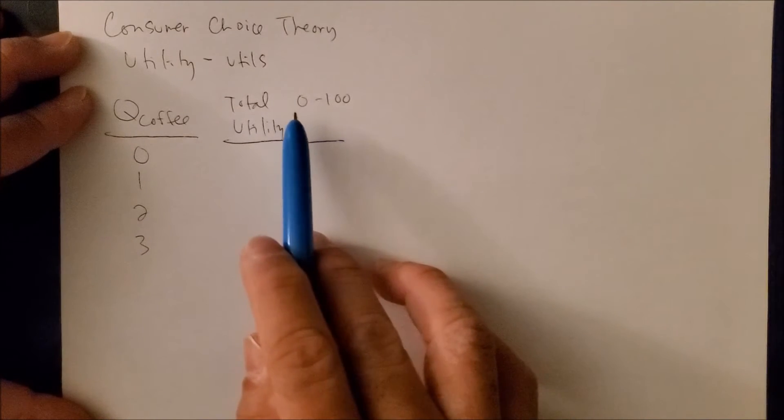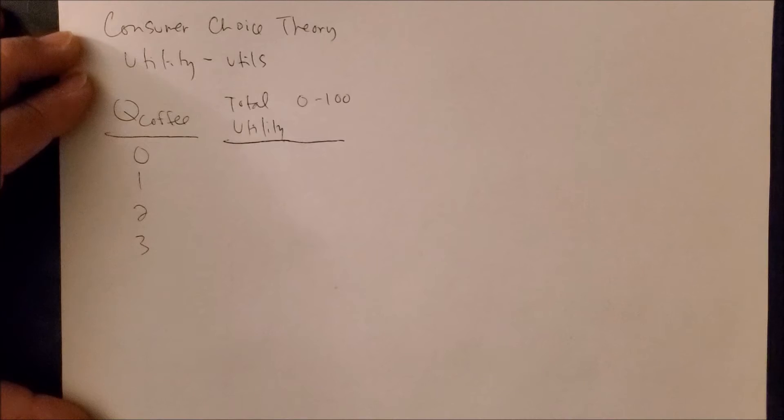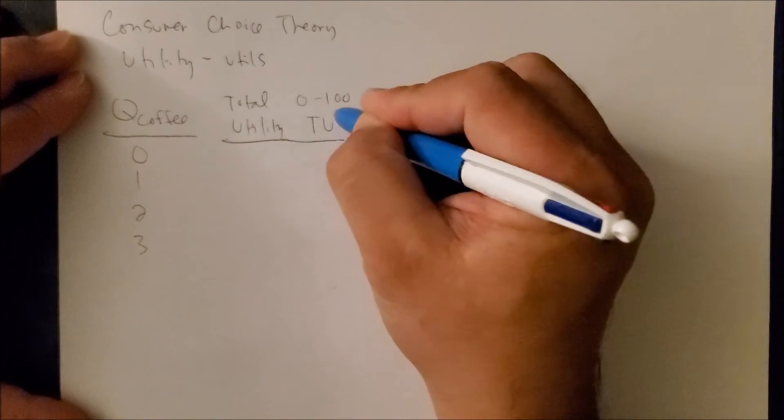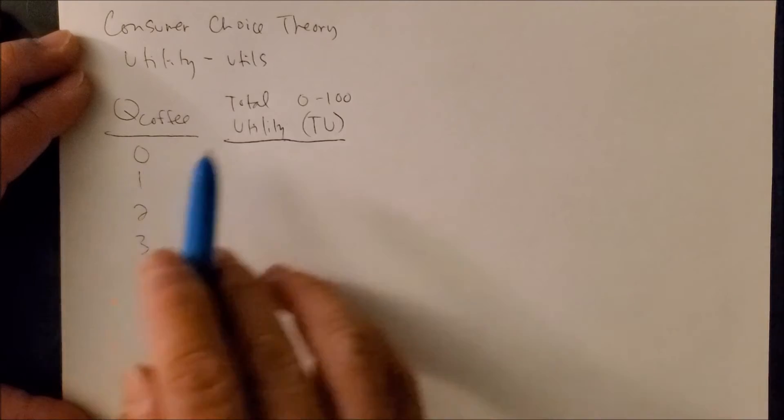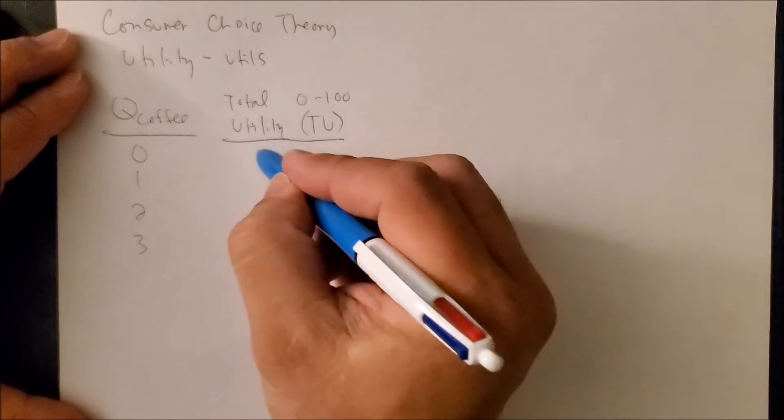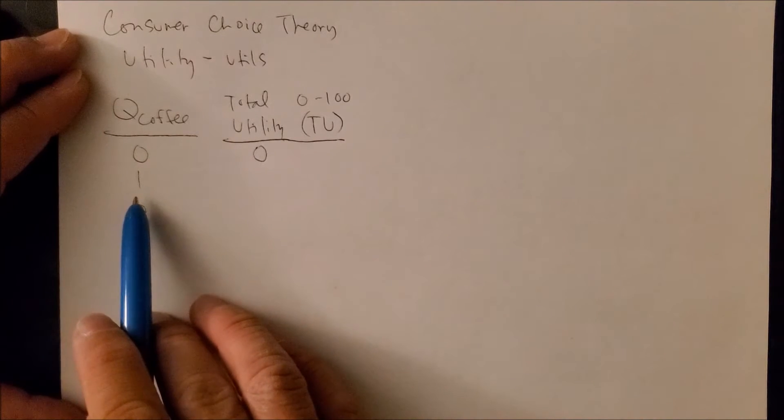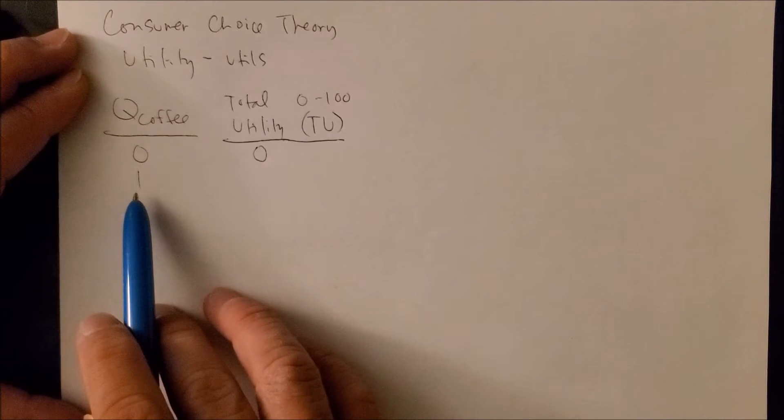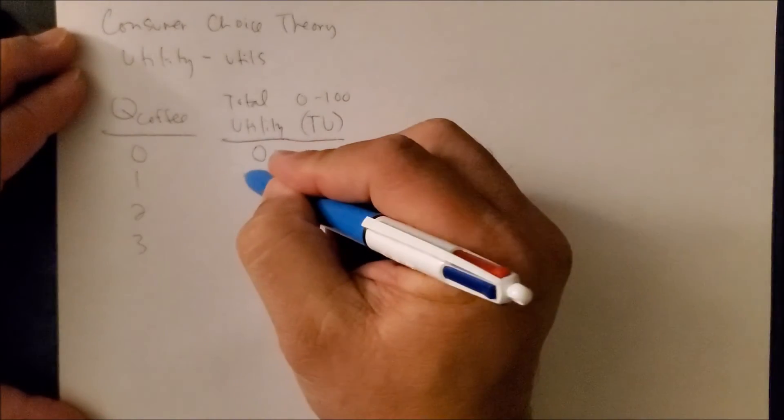Now when we think about quantity of coffee and total utility, which I will now denote as TU, when you have no coffee consumed, between zero to 100, I would assume it would be zero. You get a total satisfaction of zero, nothing, when you have drank no coffee. But when you wake up in the morning and you are very thirsty, usually at 6-7 a.m. people go and get their cup of joe and they drink their first sip of coffee and boy it tastes really, really good at that moment. Perhaps you may have a satisfaction level that might be, let's say, 100.